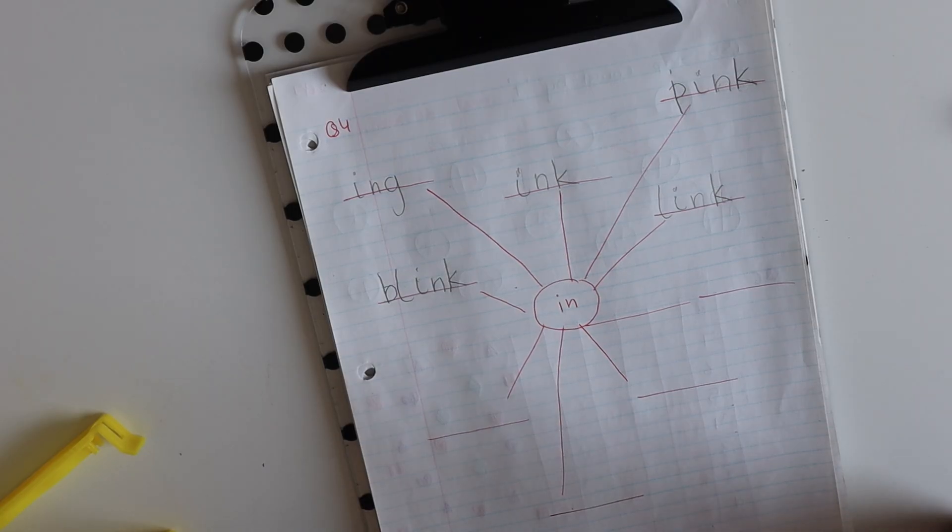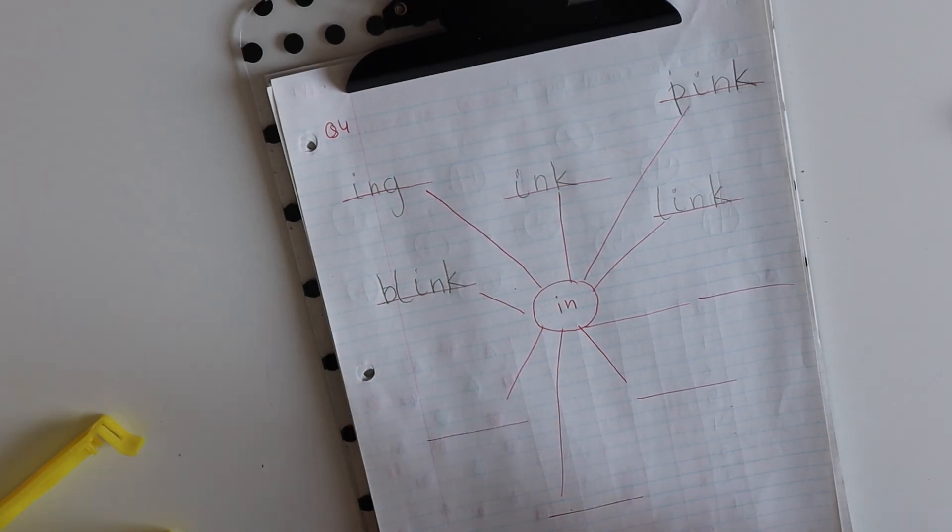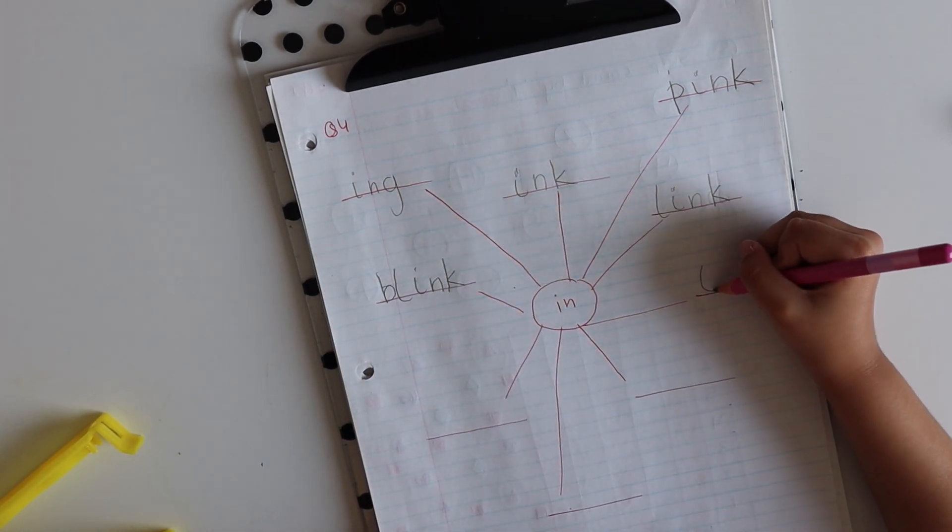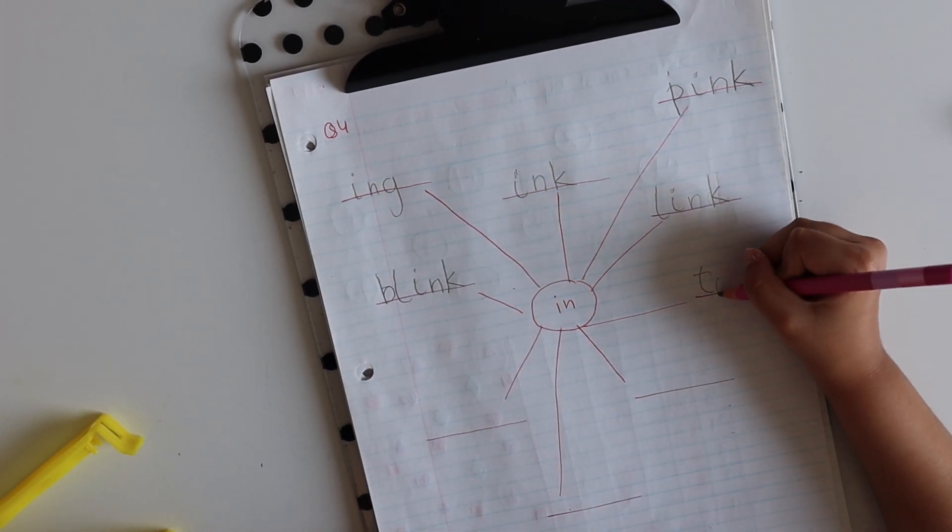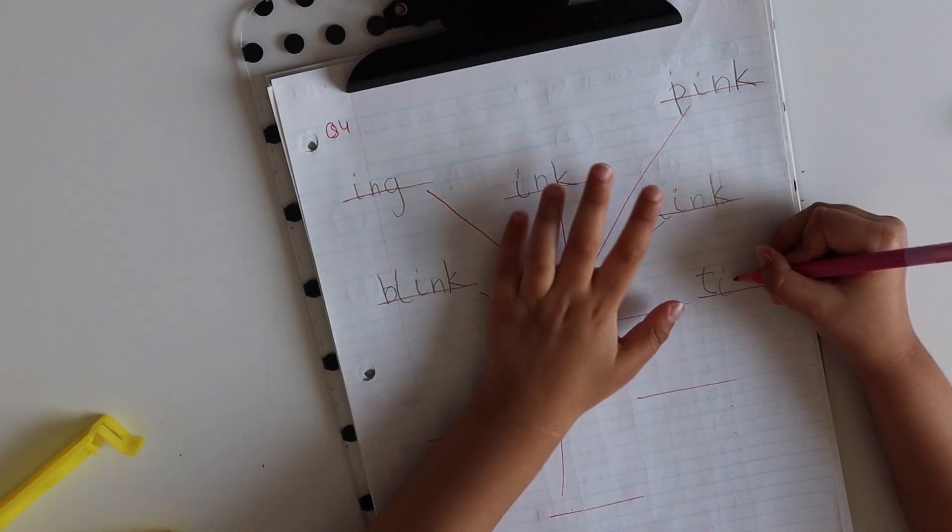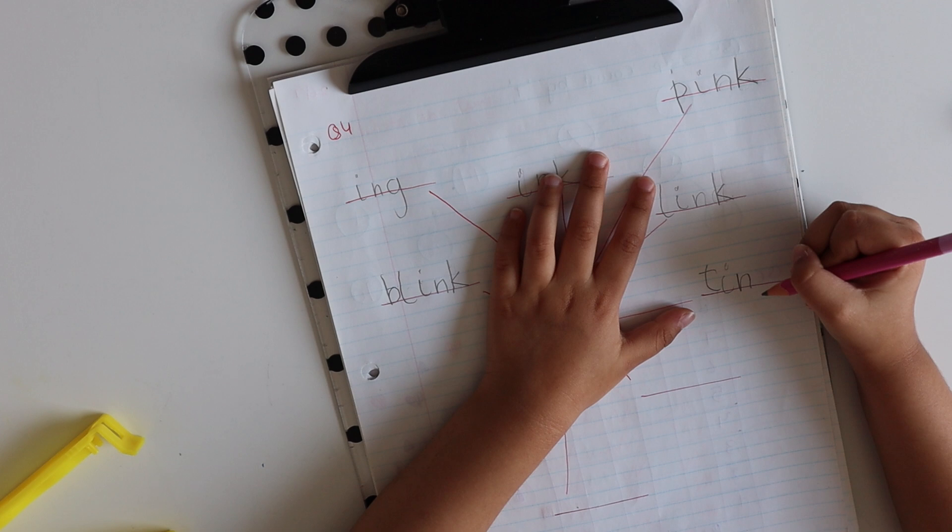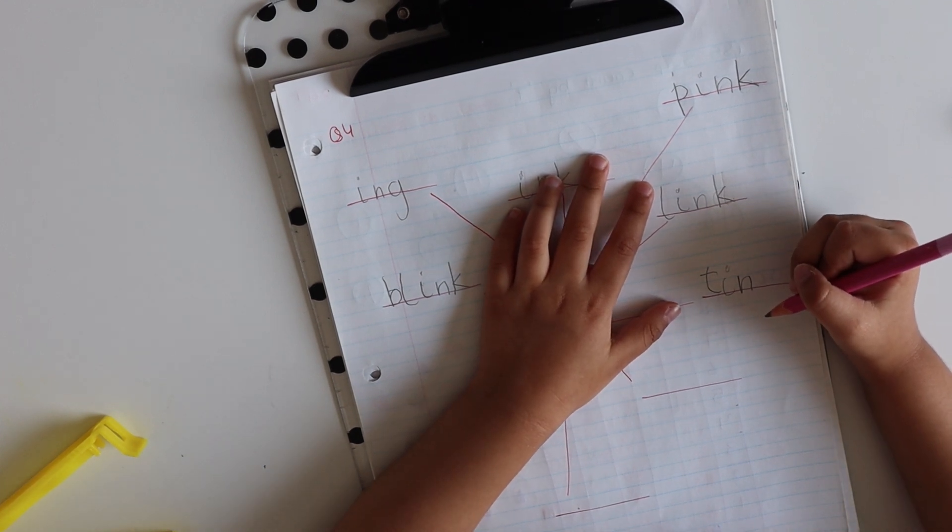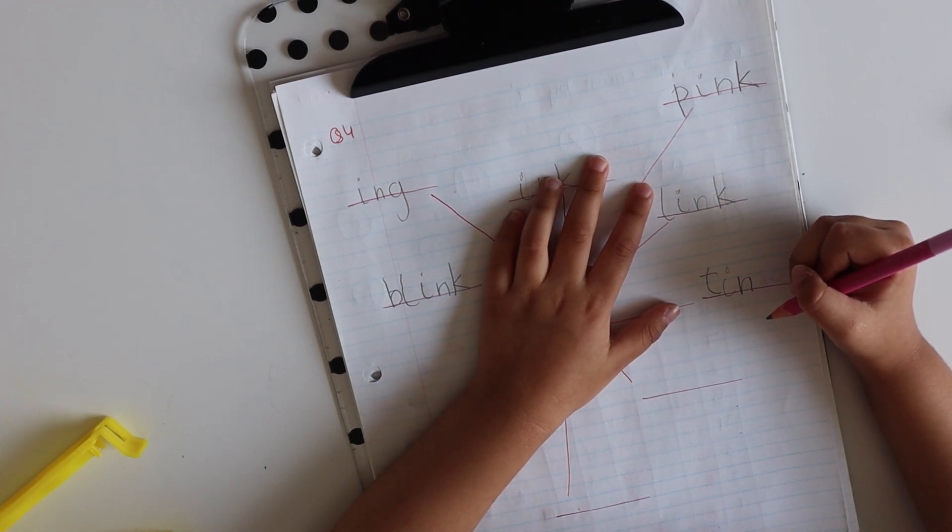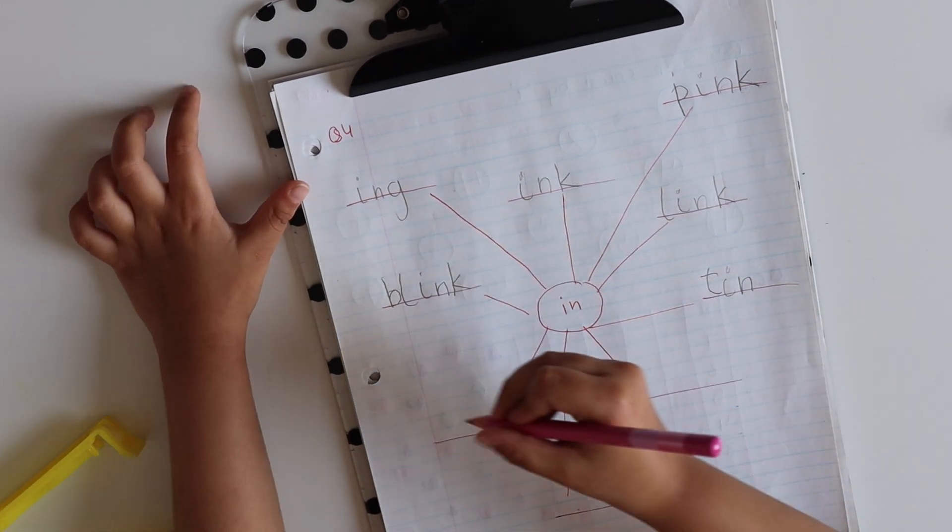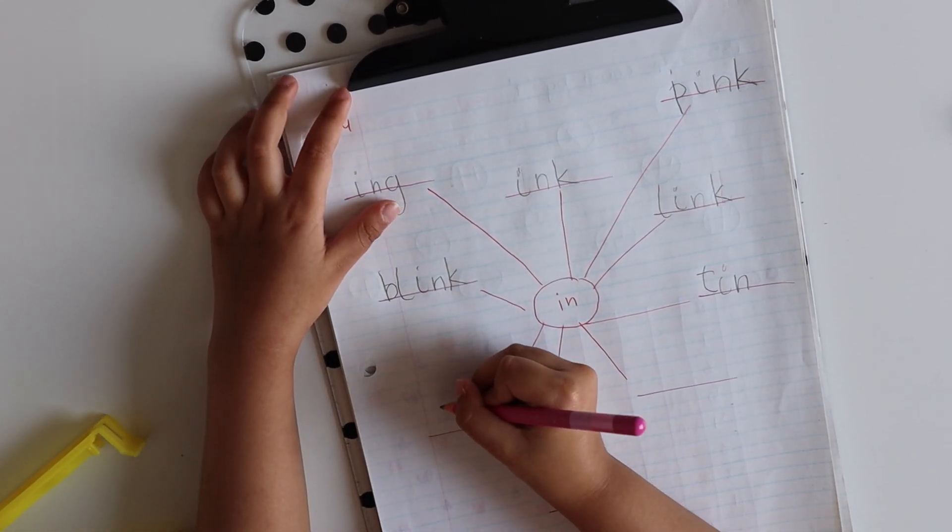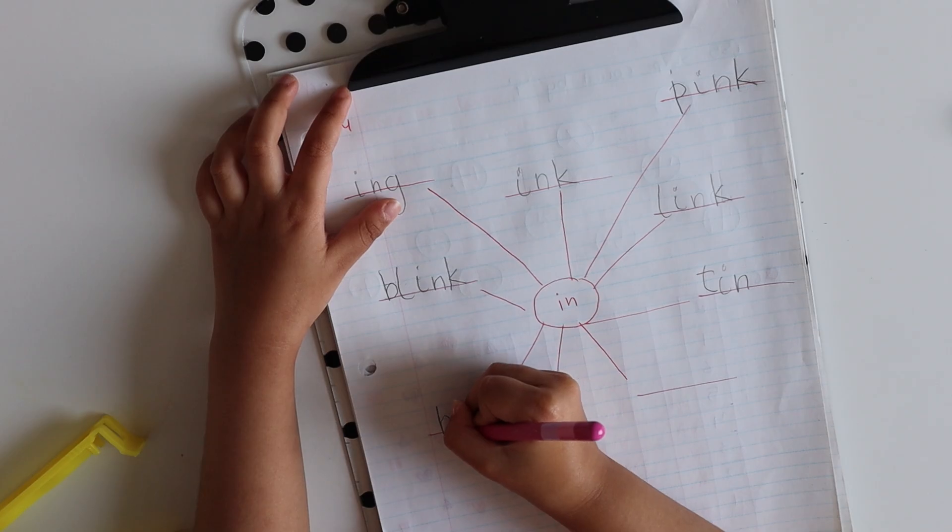You can write tin, T-I-N. Then there's bin. So many words like that. Rin, or you can write ring. How about that? Actually I want to write rin. Okay, write whatever you want.